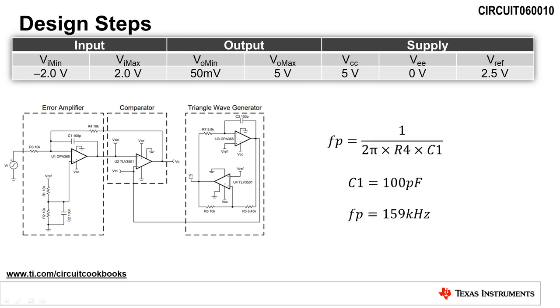The next step is to select the value for capacitor C1 in order to limit the amplifier bandwidth below the switching frequency, yet above the range of audio frequencies. The cutoff frequency, F sub P, is calculated as 1 divided by 2 times pi times R4 times C1. Selecting a 100 picofarad capacitor sets the cutoff frequency to 159 kilohertz, which is well below the switching frequency and will not interfere with the audio band.